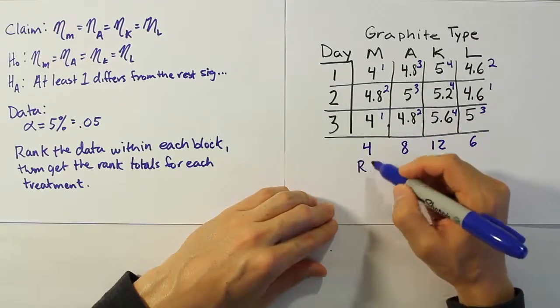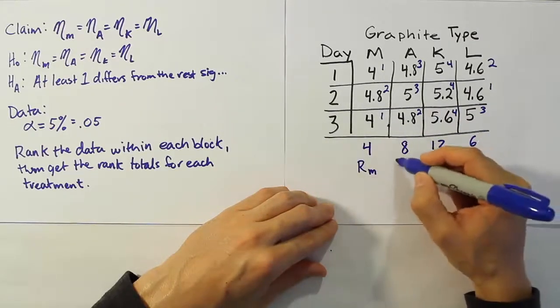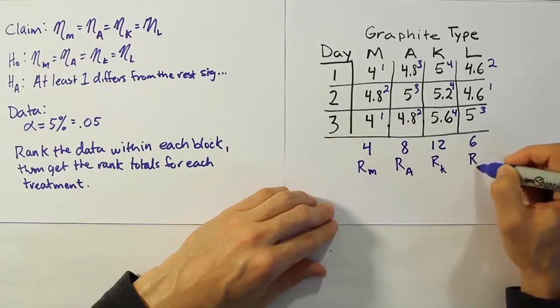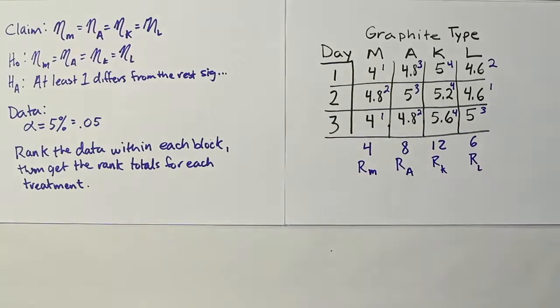So this is the rank total for graphite coater M, rank total for graphite coater A, rank total for K, and rank total for L. All right, that's it.